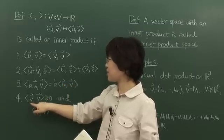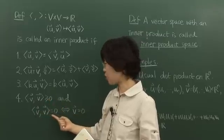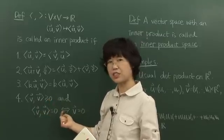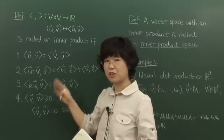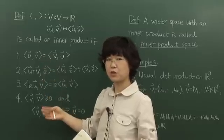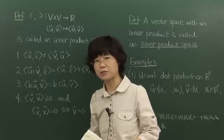And inner product of V and V is always positive and it's zero if and only if vector V itself is zero. You can compare these axioms of an inner product with dot product. Dot product satisfies all these four axioms.